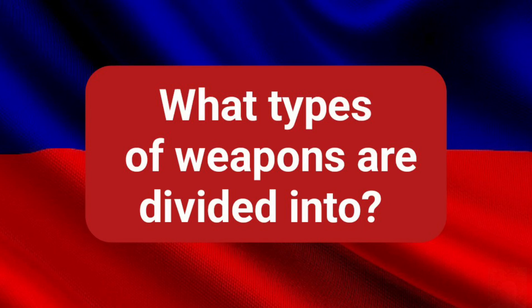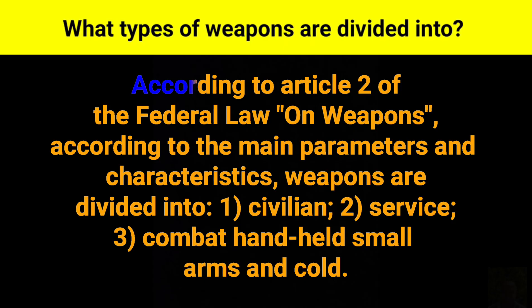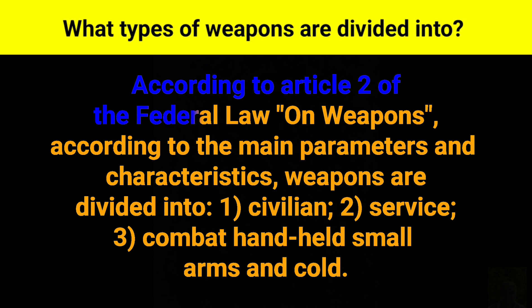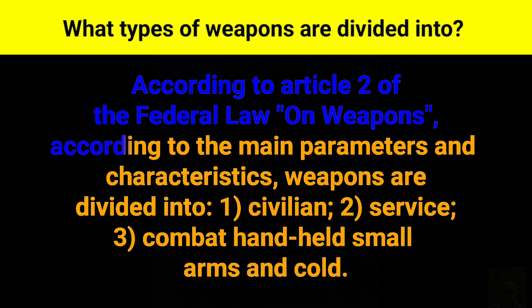What types of weapons are divided into, according to Article 2 of the Federal Law on weapons? According to the main parameters and characteristics, weapons are divided into: civilian, service, combat, handheld, small arms, and cold.